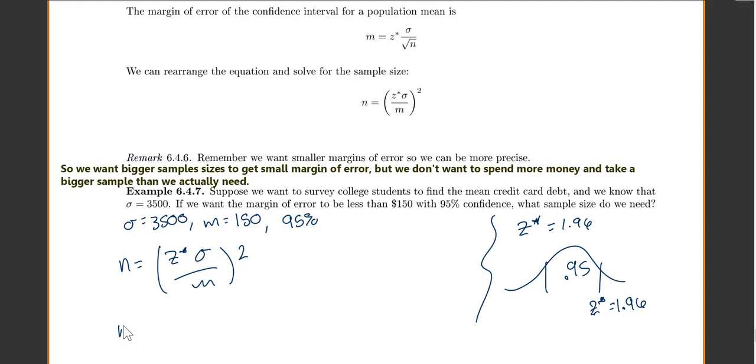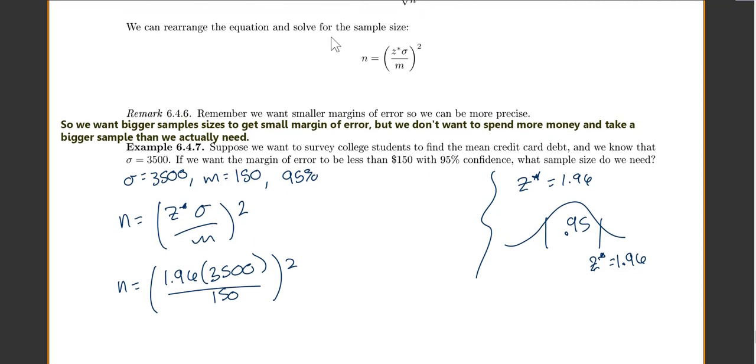Now let's plug it all in. So n is going to equal 1.96 times our standard deviation of 3,500 over our margin of error of 150 squared. So n is going to equal 2,091.54.